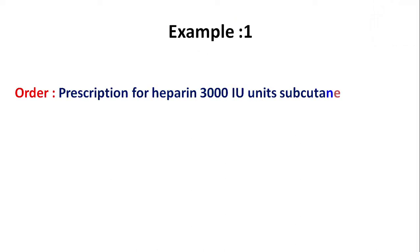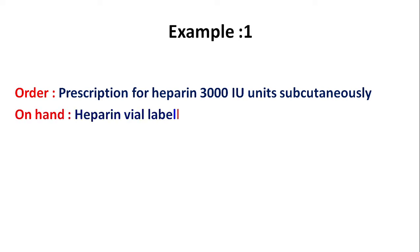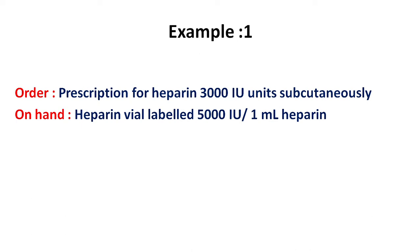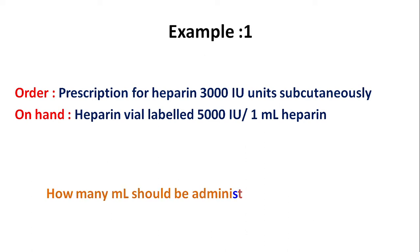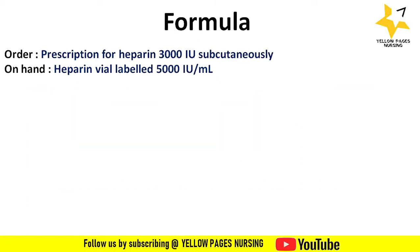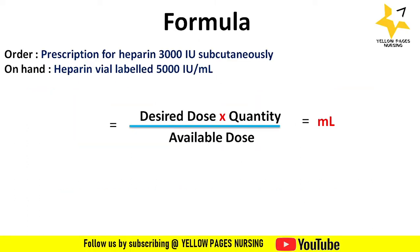Now let's have a look at the example. The doctor's order is heparin 3000 international units subcutaneously. On hand is a heparin vial labeled 5000 international units in 1 ml. How many ml should be administered subcutaneously? The formula to remember is: desired dose multiplied by quantity, divided by available dose, which gives the answer in ml.